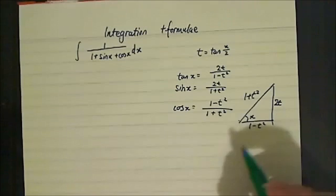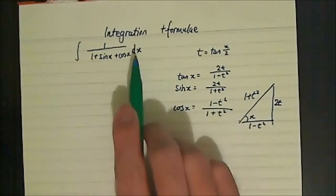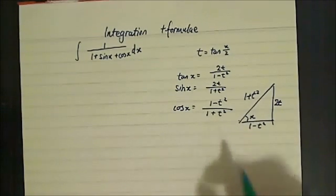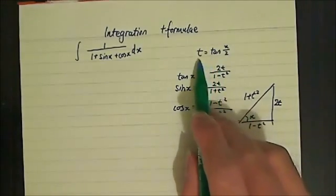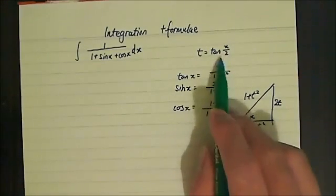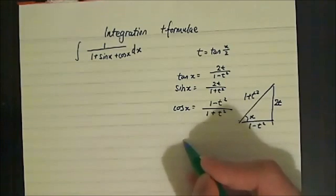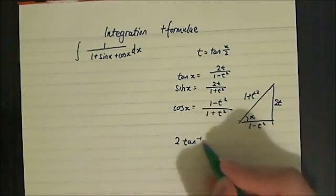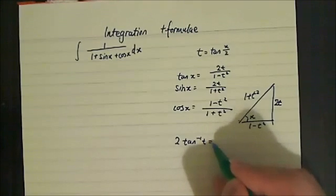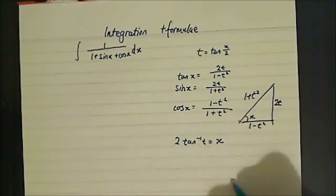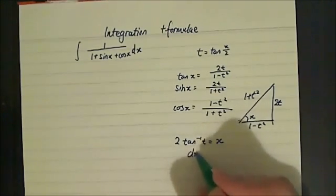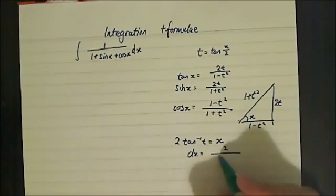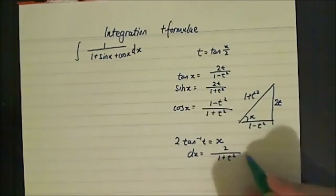Finally, we also need to know how to change dx into something in terms of t. In order to do that, we use the derivative of inverse tan. We make x the subject, so here we have x equals 2 times inverse tan of t, which means that dx equals 2 over 1 plus t squared dt.